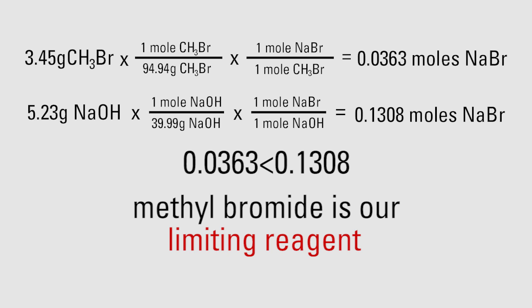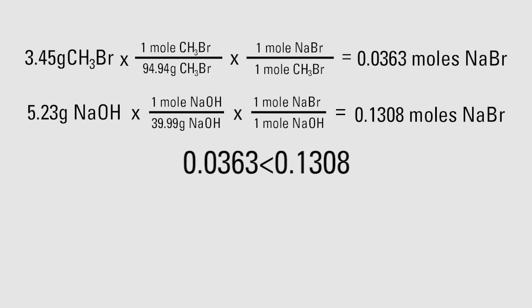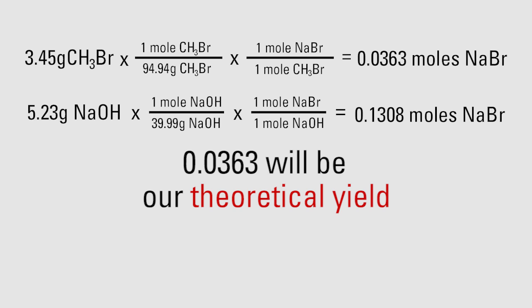Our theoretical yield tells us how much product we should end up with if our reaction runs to completion. So, after using up all of the methyl bromide, we are left with 0.0363 moles of bromide. This is our theoretical yield.